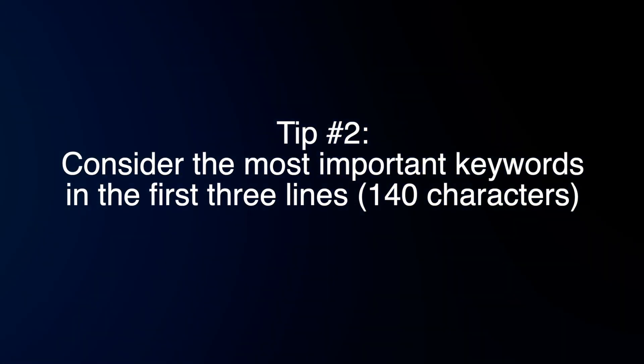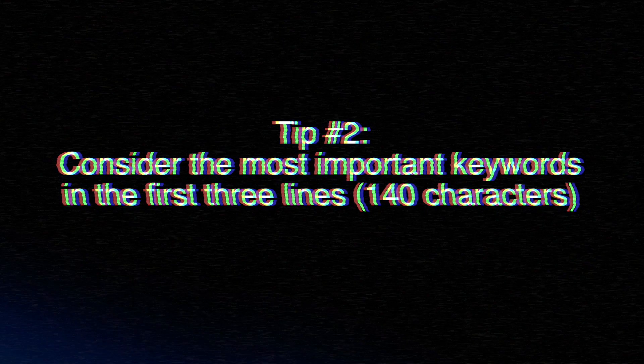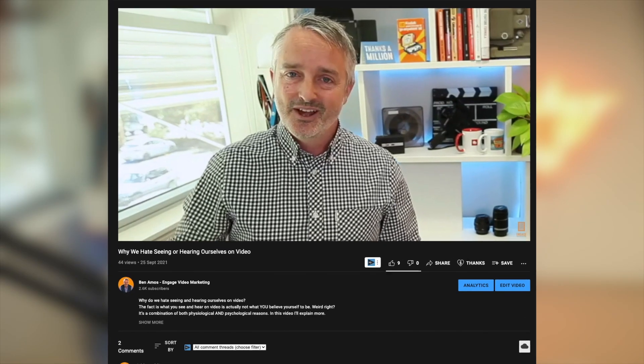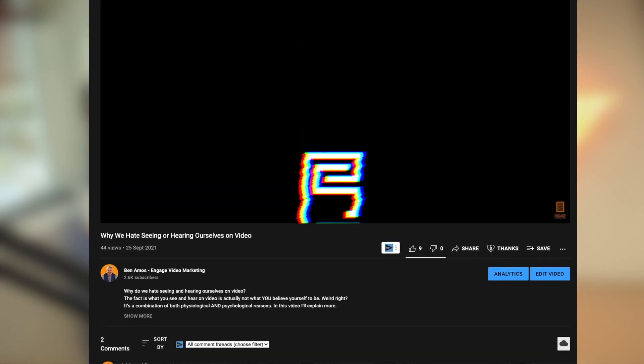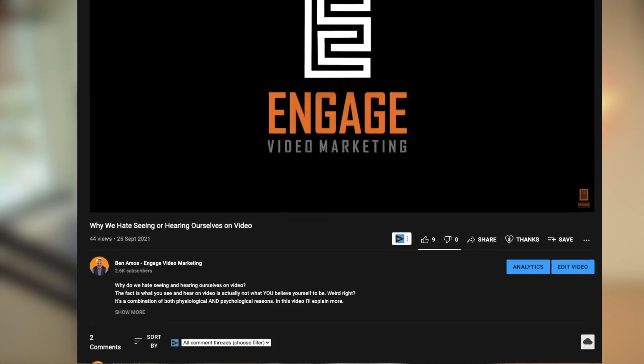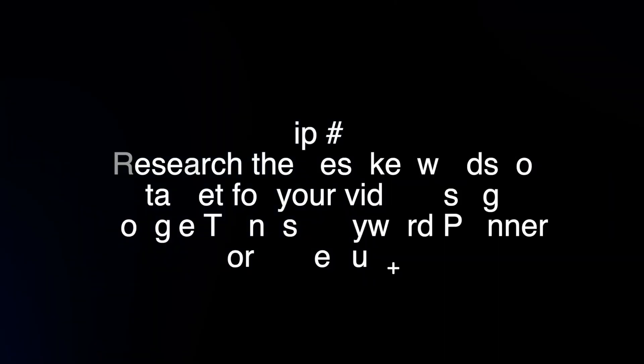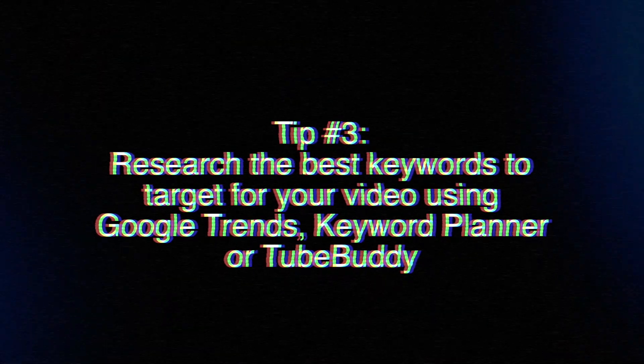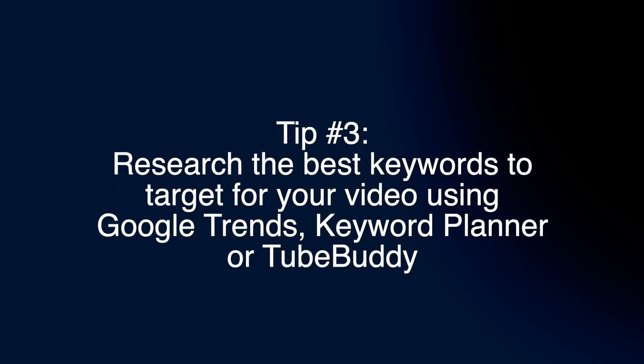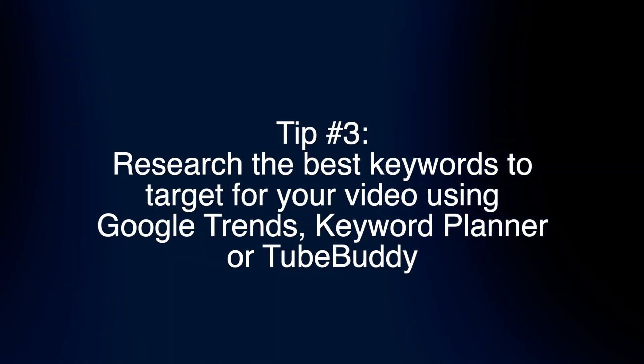You want to work the most important keywords for your video towards the beginning of your description, ideally in the first three lines within about 140 characters. This part will appear in the search results and your video watch page above the show more link, so really take the time to consider what is going to be featured in this section. Take the time to do your research on what keywords or phrases are going to be most valuable to target for your video.